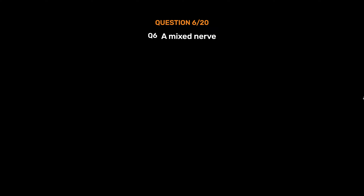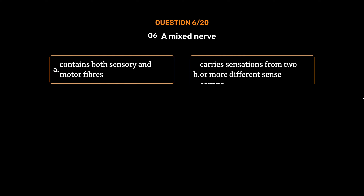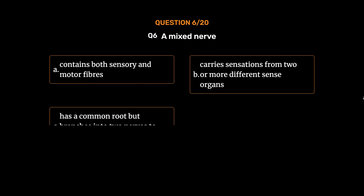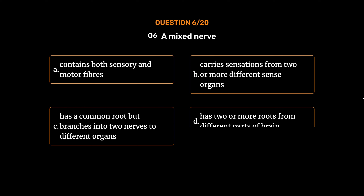Question number 6. A mixed nerve: Option A: Contains both sensory and motor fibers. Option B: Carries sensations from two or more different sense organs. Option C: Has a common root but branches into two nerves to different organs. Option D: Has two or more roots from different parts of the brain. The correct answer is Option A: Contains both sensory and motor fibers.